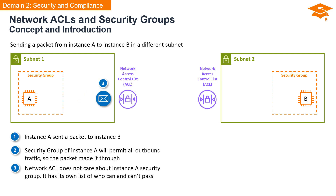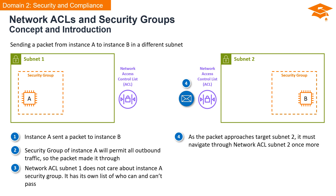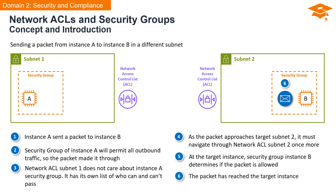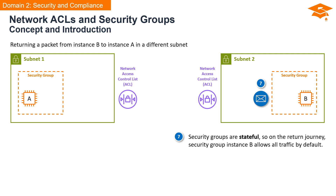Network access control lists have their own set of rules — they don't care about instance A's security group and have a separate list of who can and can't pass. As the packet approaches target subnet 2, it encounters network access control lists for subnet 2 once more, where it must abide by the rules set there. Upon reaching target instance B, its security group determines whether the packet is allowed. The packet has finally reached its destination, instance B. Security groups are stateful, which means they remember that they allowed the incoming packet, so they allow all return traffic by default on the journey back.